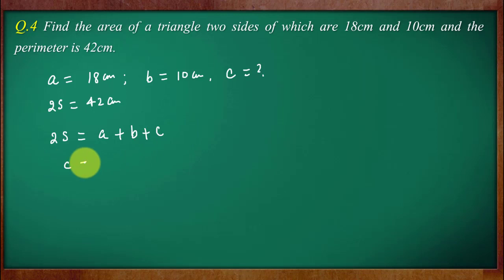From here we can easily find out the value of c which will be 2s minus a minus b. Putting in the values, 42 centimeters minus 18 centimeters minus 10 centimeters, and this gives us the value of c as 14 centimeters.